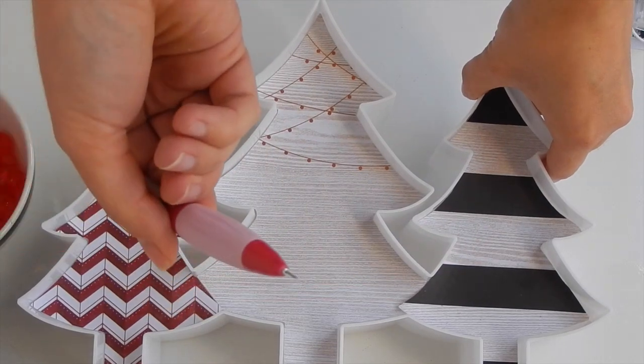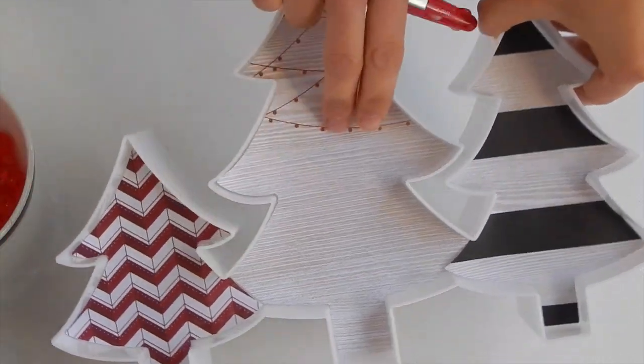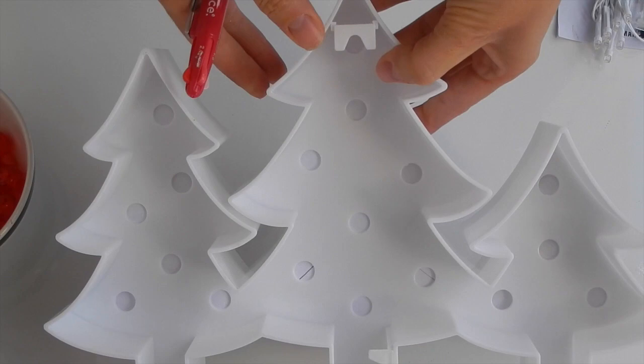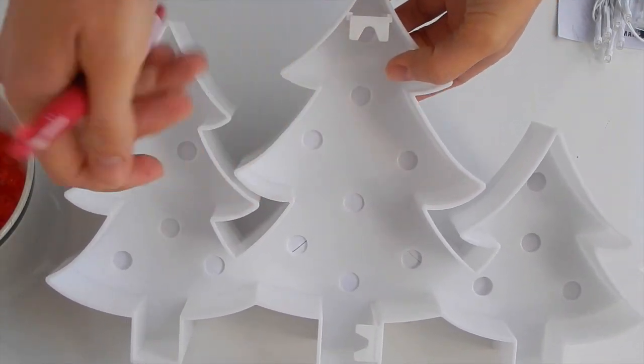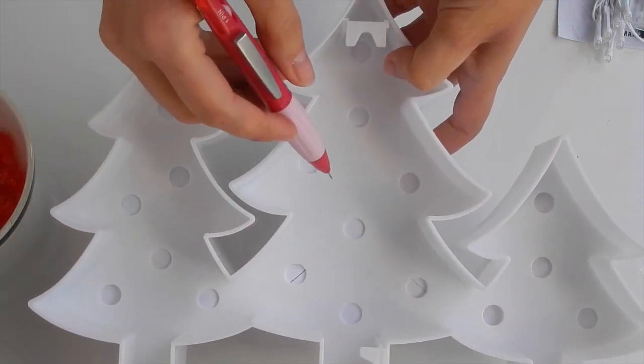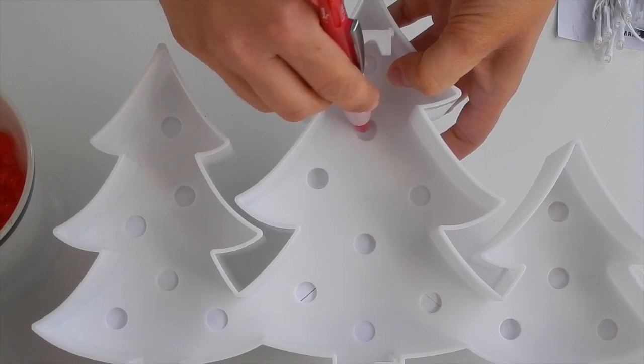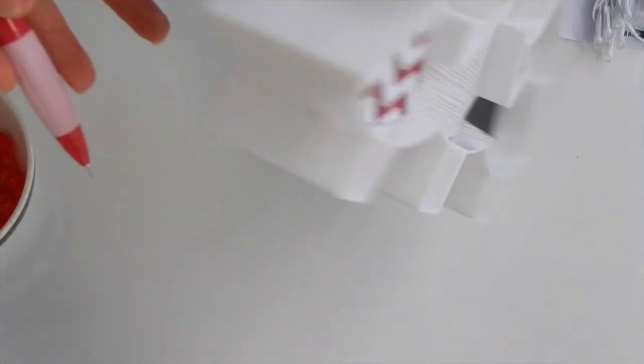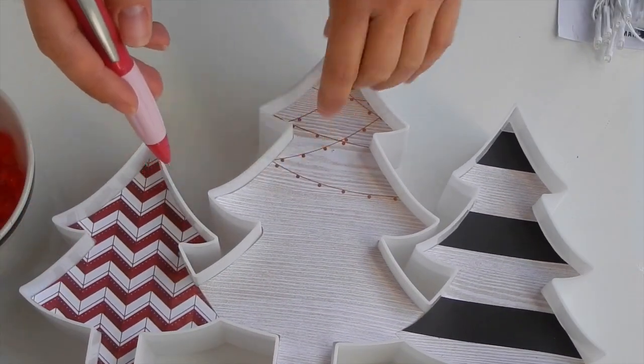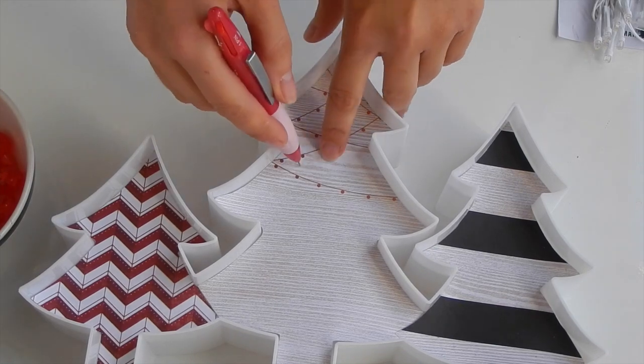Now what I'm going to do is take my paper piercer. This is the easiest way I find to add the lights into the marquee. Since the paper covers up the holes, I simply flip it over and very carefully poke a little hole into each circle so you can see where each light is supposed to go.